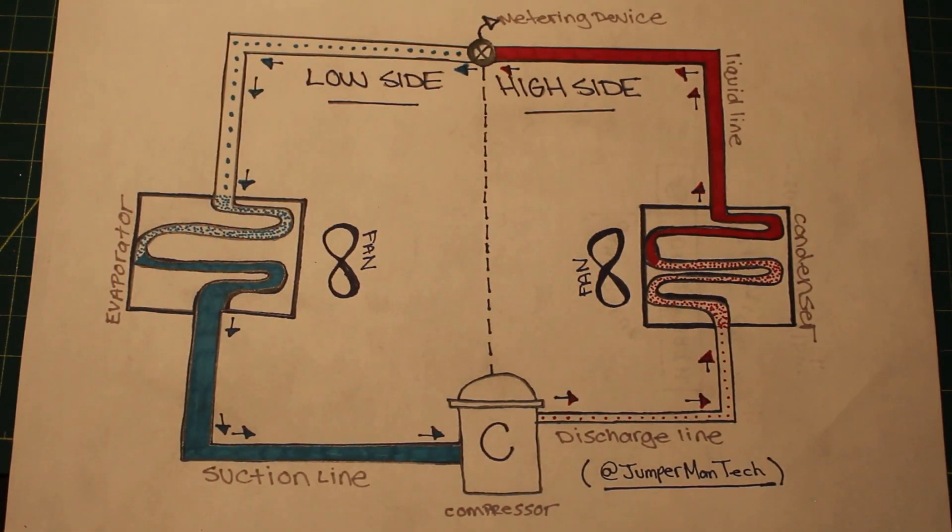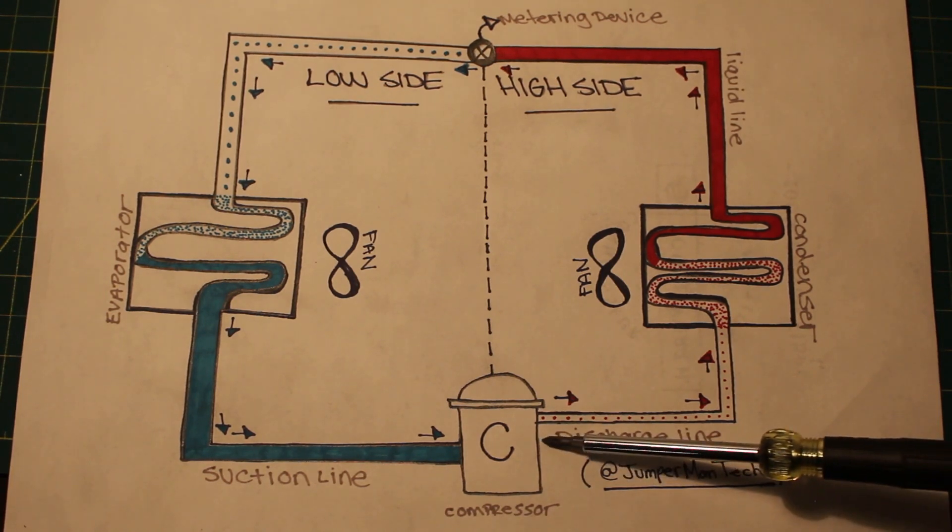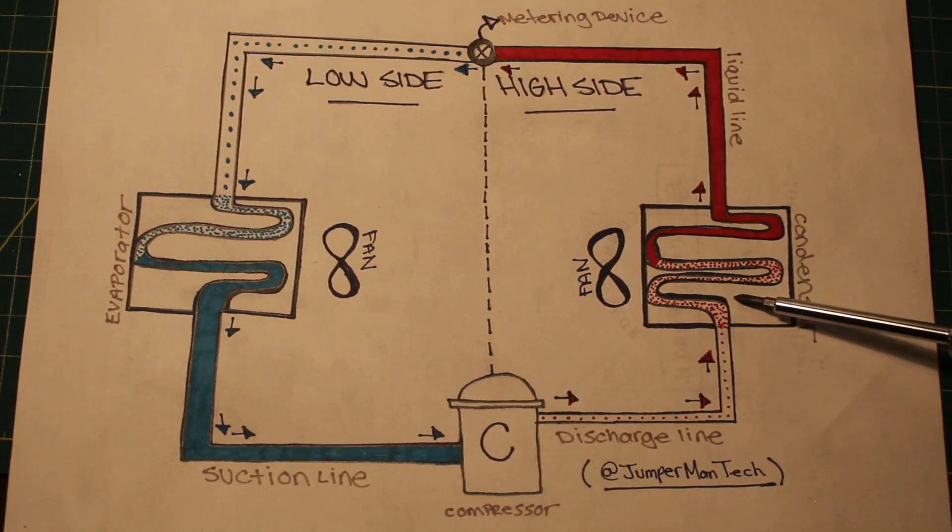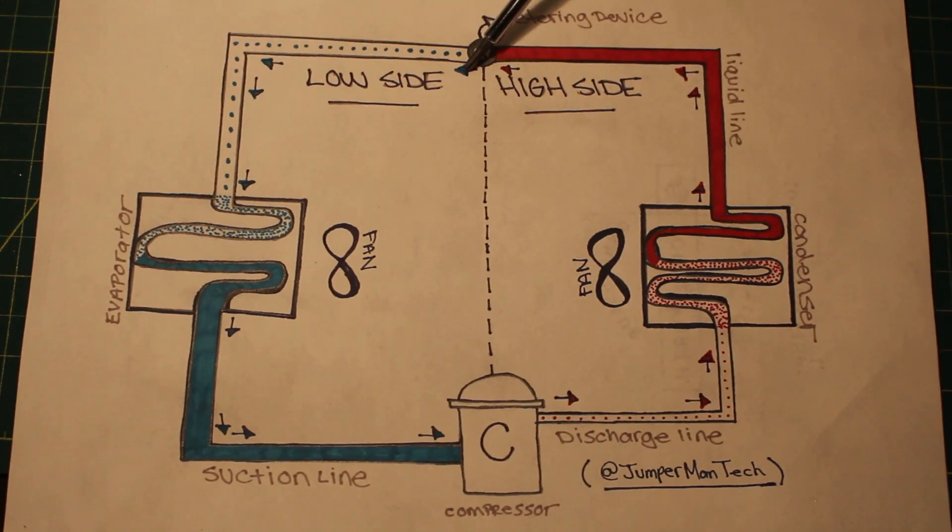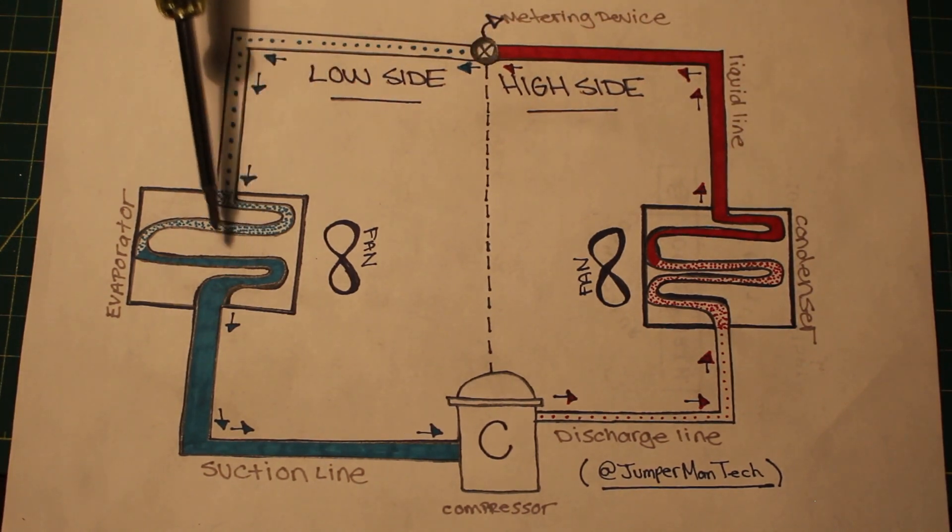Thank you to everyone tuning in to Jumper Mantec. We have four major components to the refrigeration cycle: our compressor, our condenser, our metering device, and our evaporator.